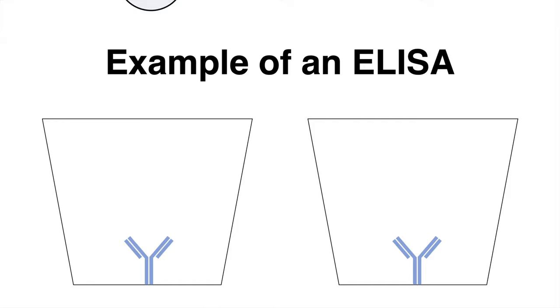On the left, we provide a sample containing our protein. On the right, we have the control without the target protein. Our antigen in orange will be immobilized. A washing step will discard everything else.